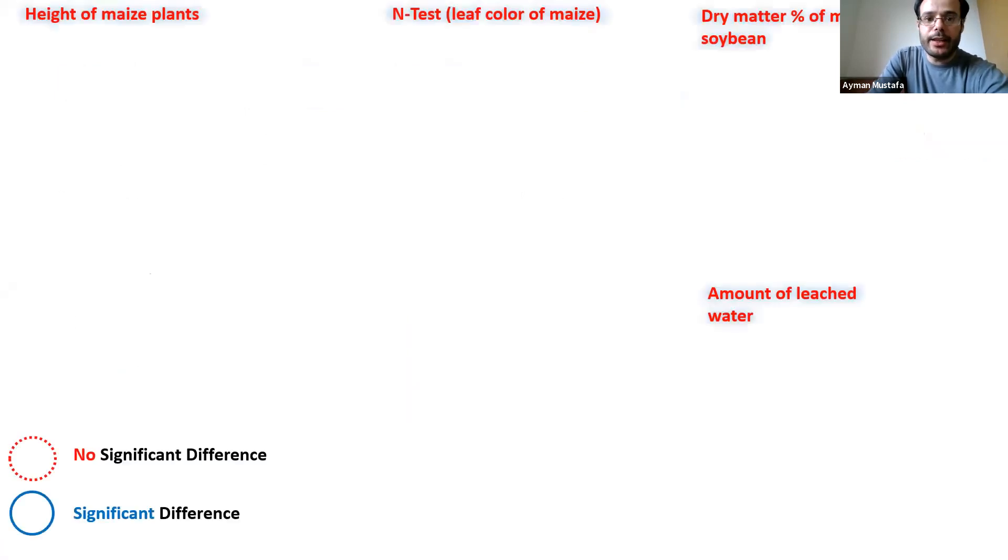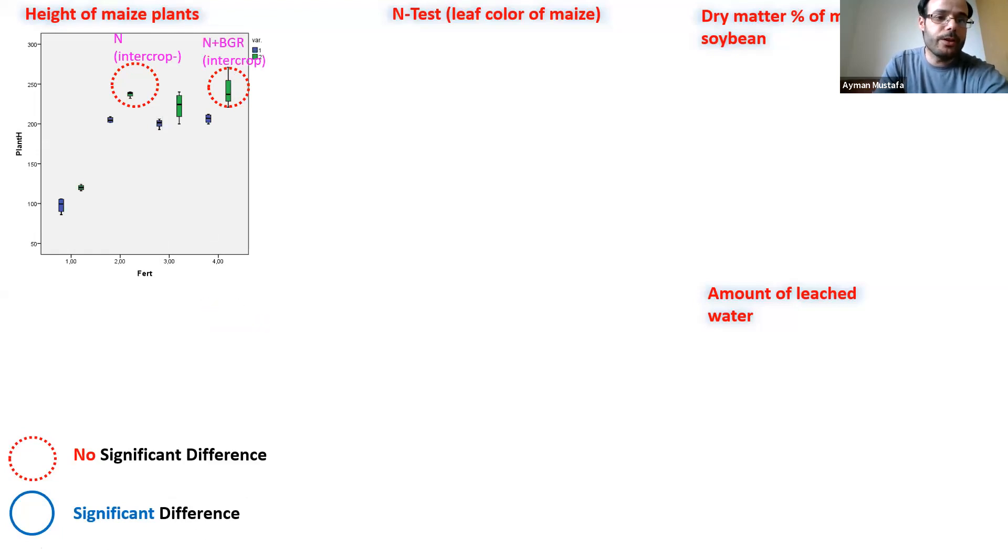We studied the significance of the means of the treatments, at first the height of maize plants. There were no significant differences between the treatments of nitrogen with intercrop and biogas residues in intercrop, and also between nitrogen with monocrop and biogas residues in intercrop.